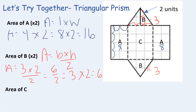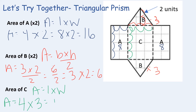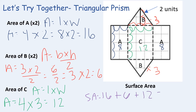Lastly, we find the area of C, also a rectangle — length times width. The length is 4 and the width is 3, so 4 times 3 is 12. According to our definition, we find the sum of all areas: area of A was 16, area of B triangles was 6, and area of C was 12. So 16 plus 6 plus 12 equals 34 square units.